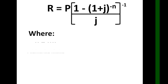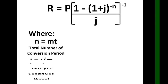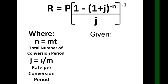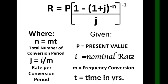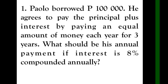We again need n and j. The given values are: P for the present value, i for the nominal rate, m for the frequency of conversion, and t for the time in years. Example: Paulo borrowed 100,000. He agrees to pay the principal plus interest by paying an equal amount of money each year for 3 years. What should his annual payment be if interest is 8% compounded annually?